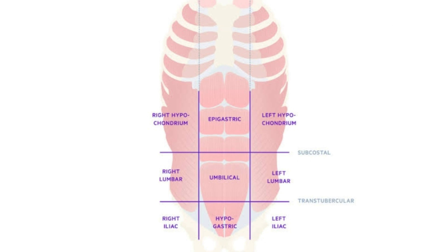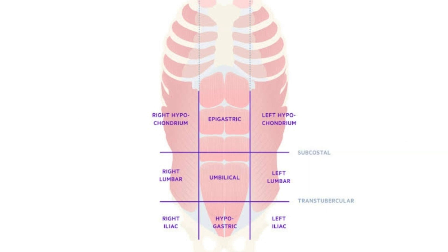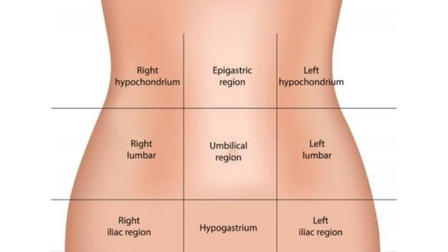The upper horizontal line is the subcostal line, taken from the inferior parts of the lowest costal cartilage. The lower horizontal line is the intertubercular line, connecting the tubercles of the pelvis. The three main centrally positioned regions are the epigastric, umbilical, and hypogastric regions. The hypogastric region is also known as the pubic region.